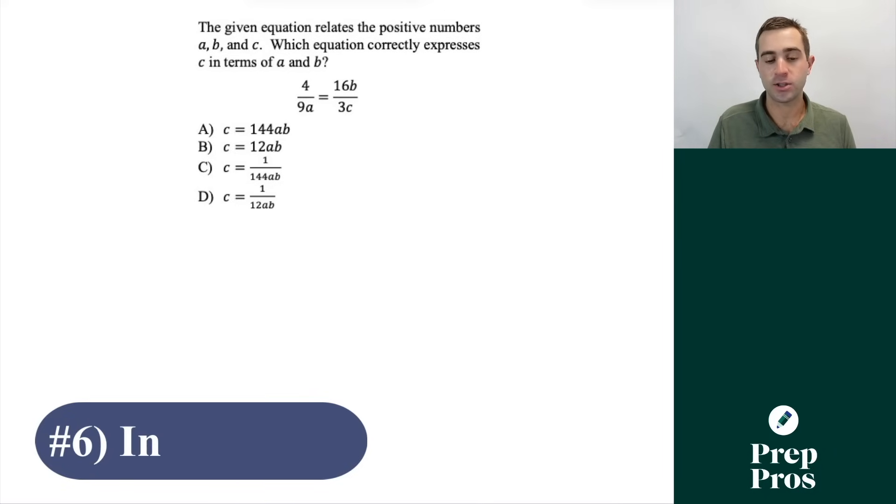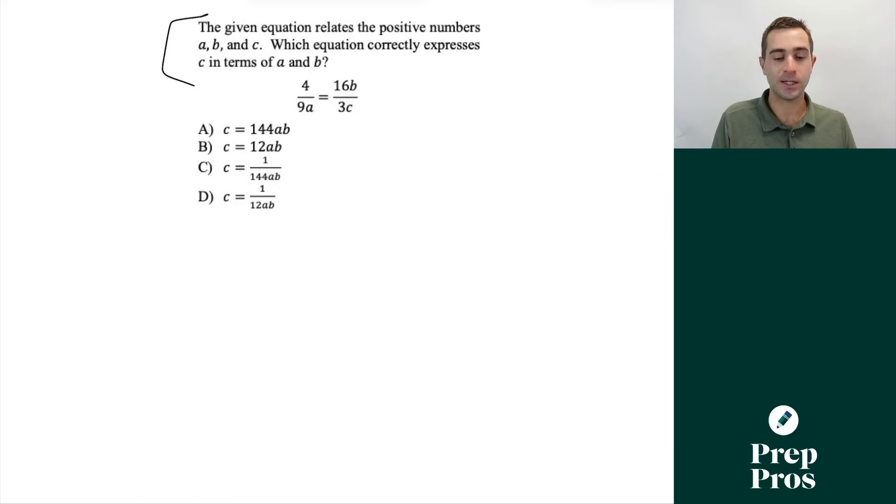The next thing we're going to see on the test are in terms of questions. Anytime you see questions like this where it says the given equation relates to the positive numbers a, b, and c, which equation correctly expresses c in terms of a and b? As you can see in the answer choices, we're just trying to isolate for c. Oftentimes fractions give students a lot of trouble with these, so the best thing you can do if you're dealing with fractions and in terms of questions is to go ahead and cross multiply.